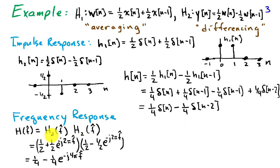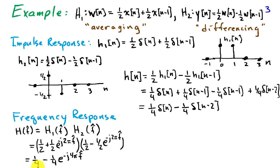The frequency response is the product of the frequency responses of each system. H1 of f hat is 1/2 plus 1/2 e to the minus j 2 pi f hat, whereas the second system h2 has frequency response 1/2 minus 1/2 e to the minus j 2 pi f hat. Multiplying these two terms out by foiling the various components, you find that the result is 1/4 minus 1/4 e to the minus j 4 pi f hat. This is consistent with the impulse response that we found.